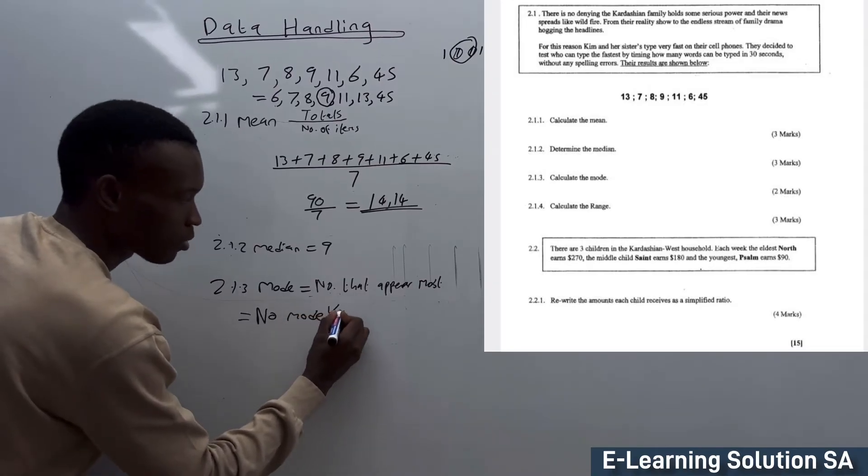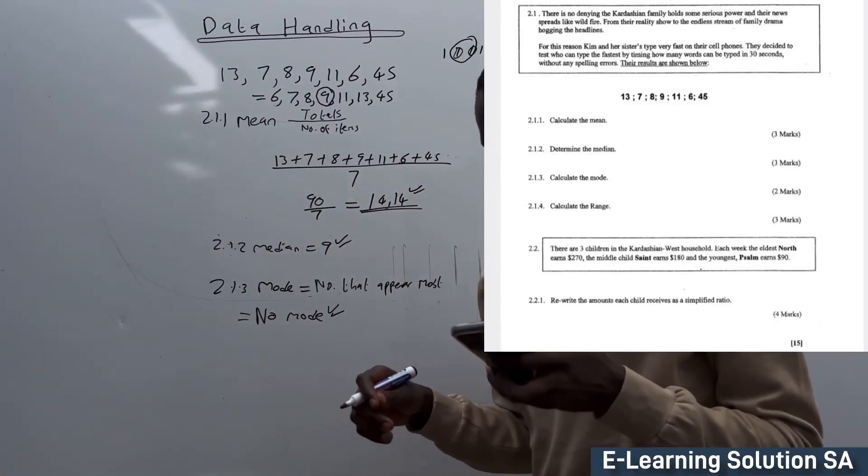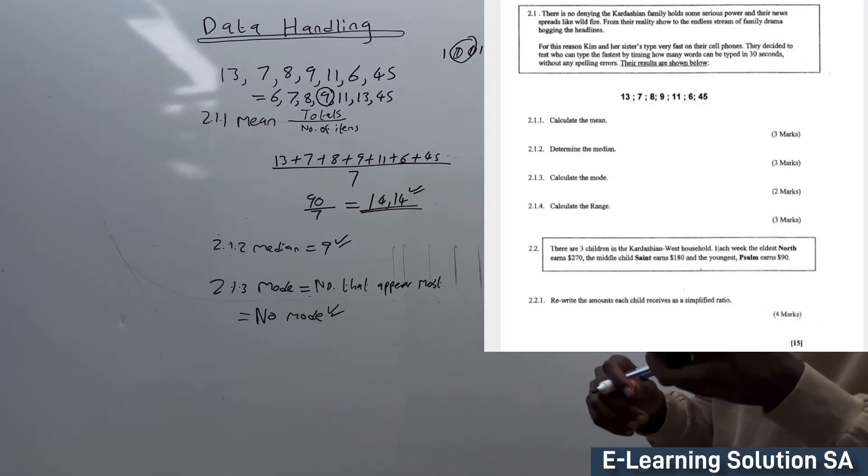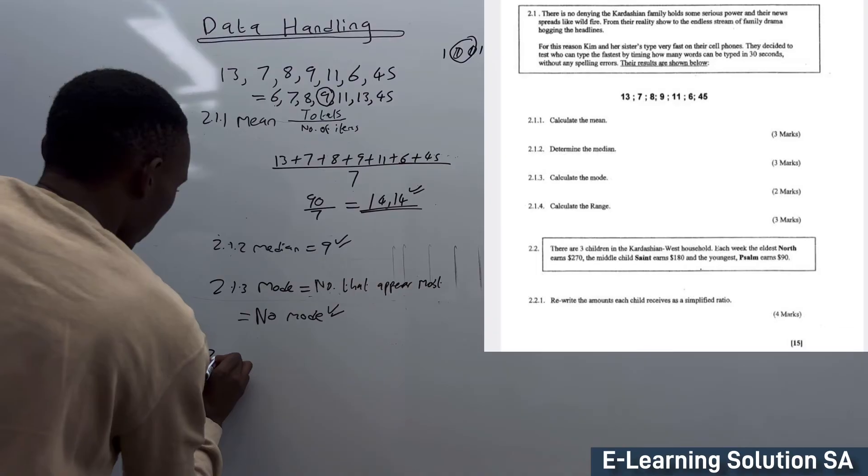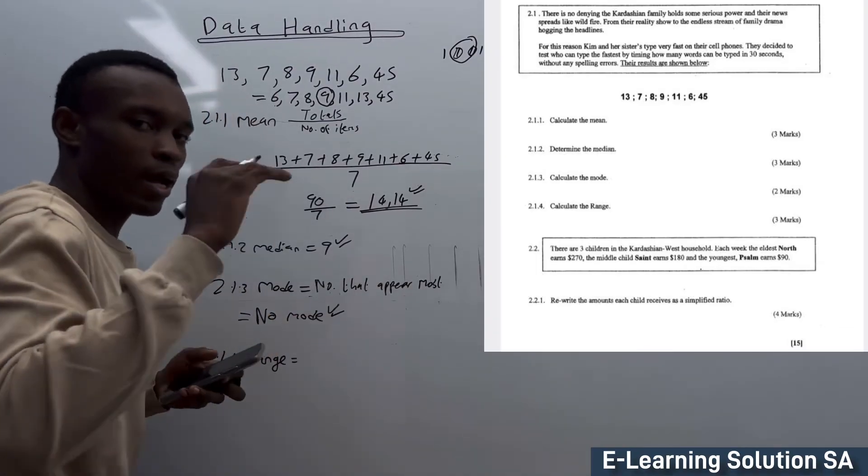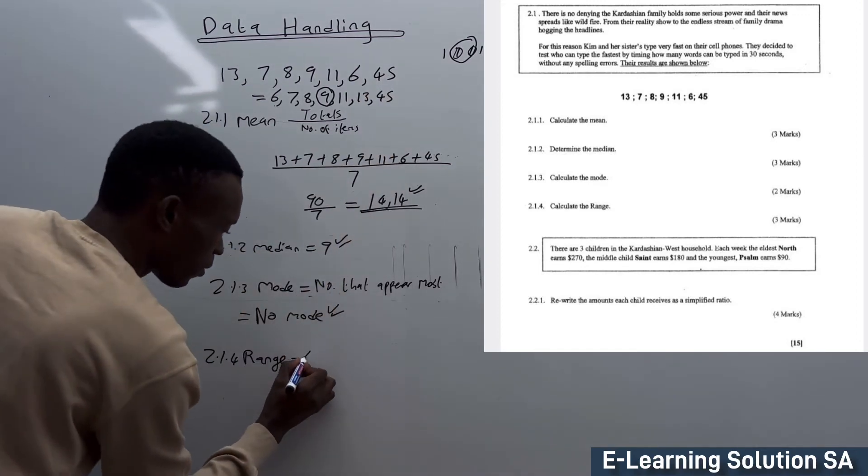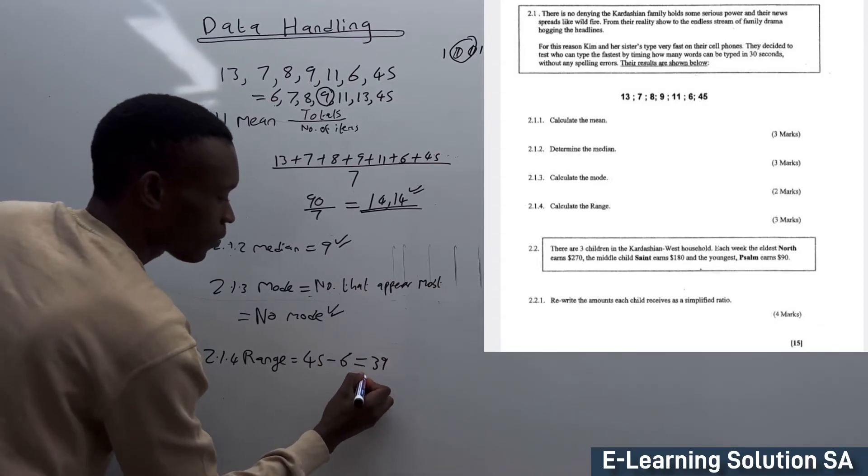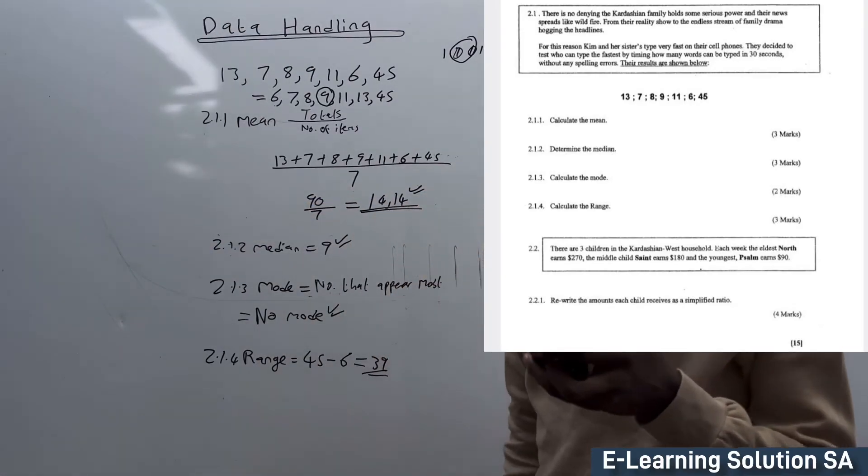2.1.4: Calculate the range. Because we already arranged them, it's going to be simple. How do we calculate range? You take the highest and subtract the lowest. The highest is 45 and you subtract 6, which gives you 39. That's your range, very simple.